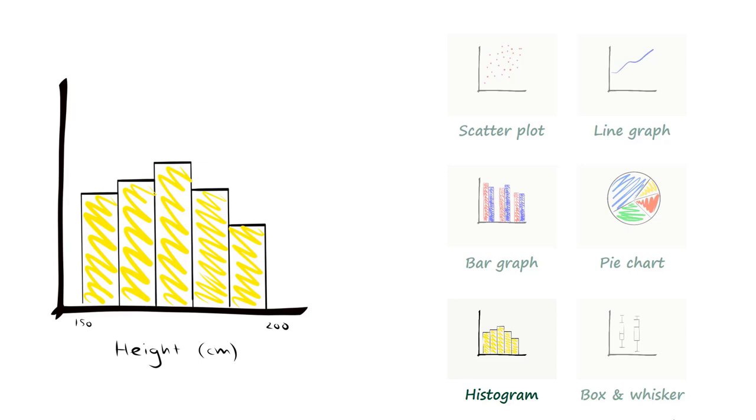Someone's height could be any value between 150 and 200 centimetres. Histograms group the continuous data into ranges. For example, height can be divided into 10 centimetre ranges. Any study participant with a height between 150 and 160 centimetres would be grouped into this range.